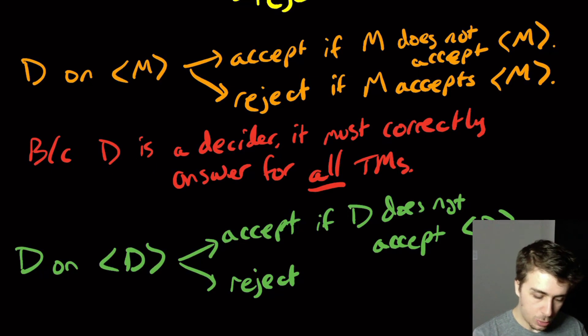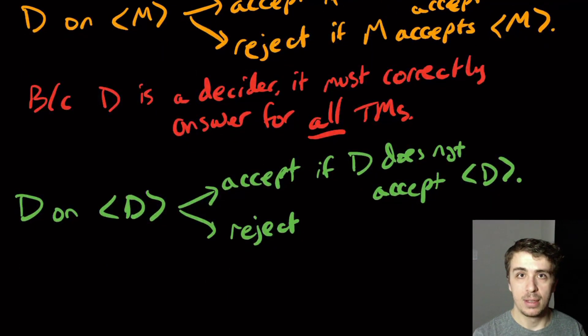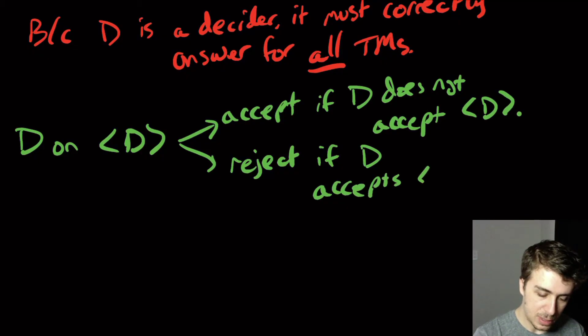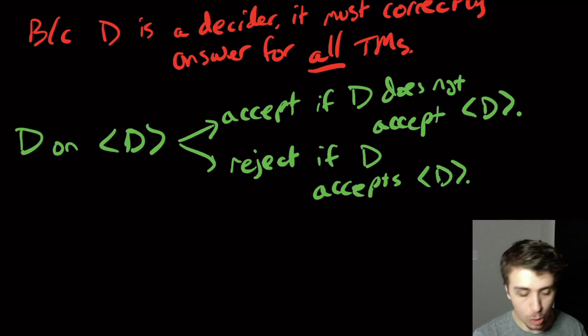So this says accept if D does not accept D. Wait, so D accepts its own string if D does not accept its own string? That makes no sense. Okay, well, let's try the other one. Reject if D accepts D. Wait, so D rejects its own encoding, its own string, the code representing it, if it accepts it? Wait, that's impossible. So that's the contradiction.